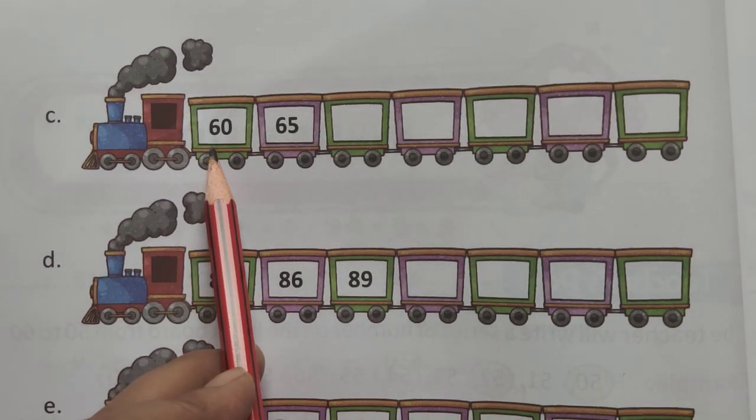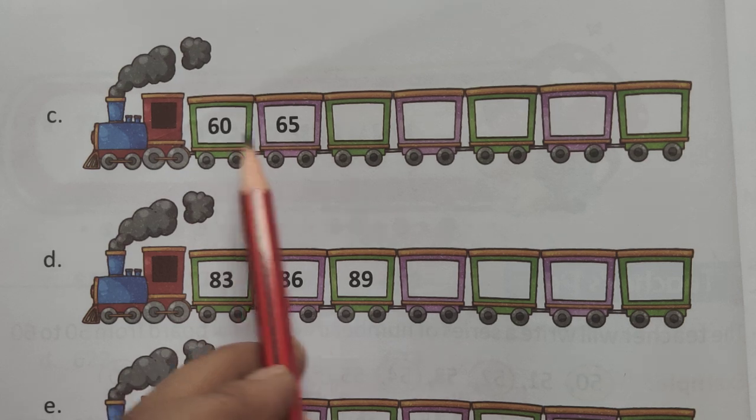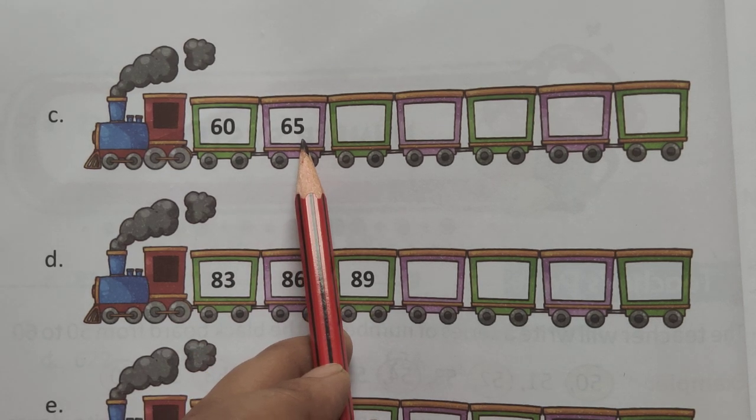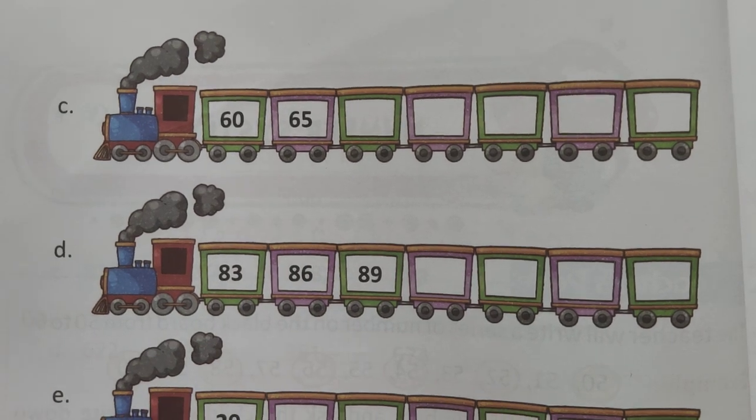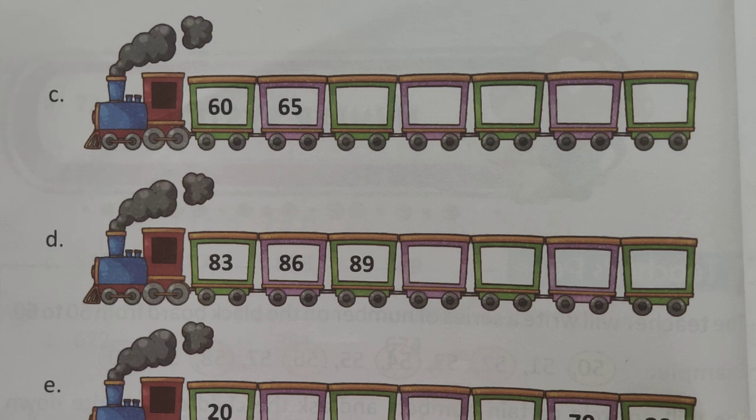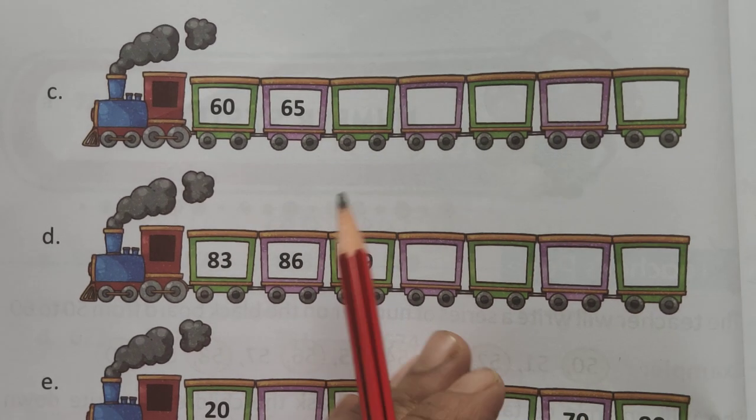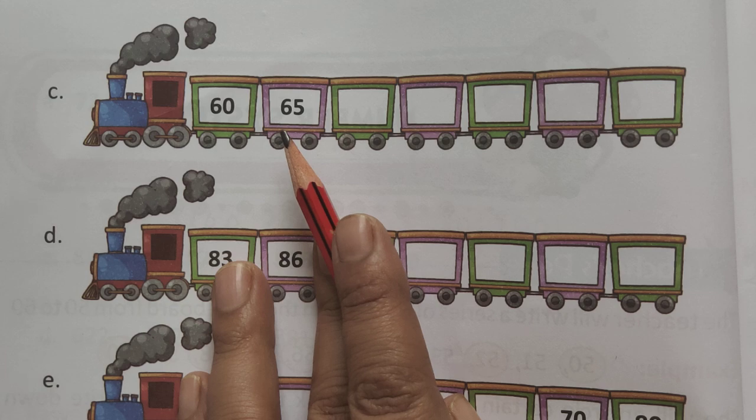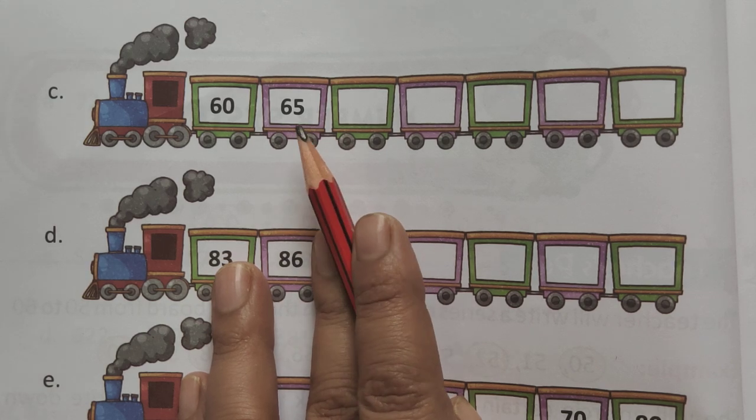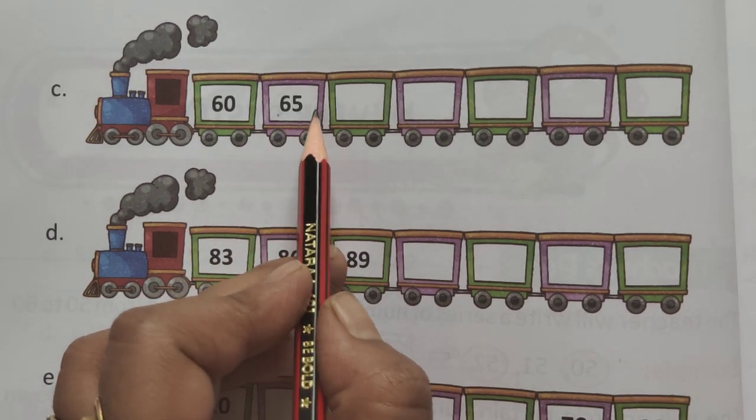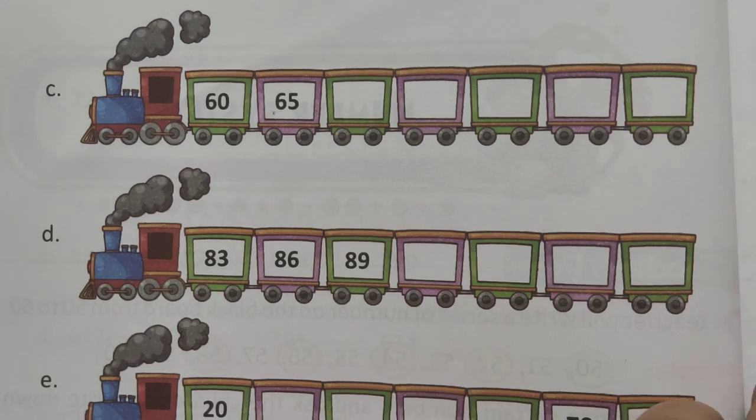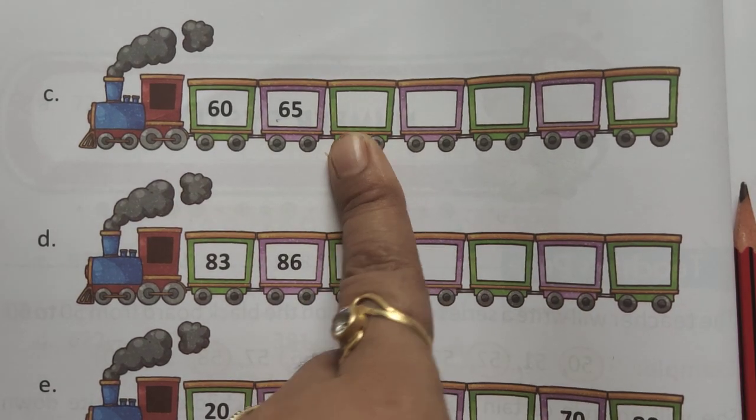C, 60, 65. So, count them, count the finger, all of 61, 62, 63, 64, and 65. After that, 5 skip number, okay?